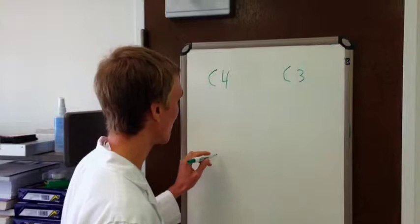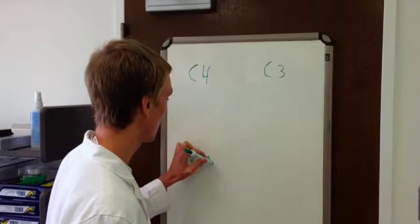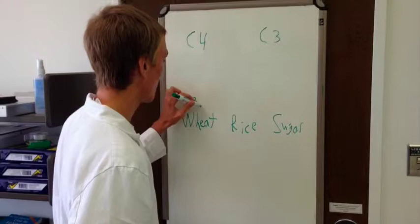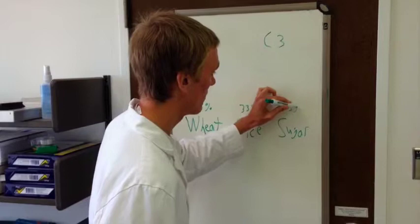But we'll just say we would feed them maybe wheat and rice and pure sugar. And let's just say we would feed them 33% of each of these.